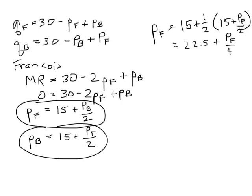Subtract PF over 4, I get three-quarters PF on the left-hand side. Multiply through by four-thirds and I get PF equals four-thirds times 22.5, which equals 30.